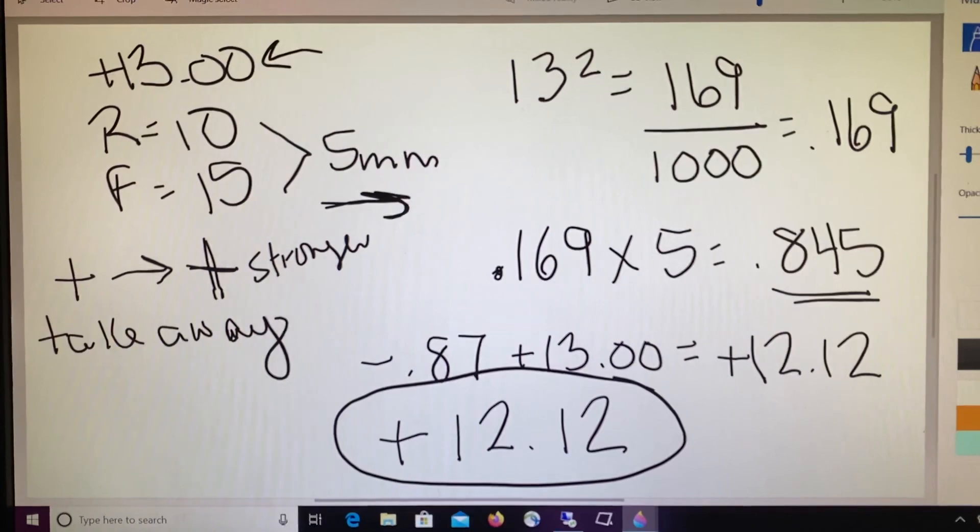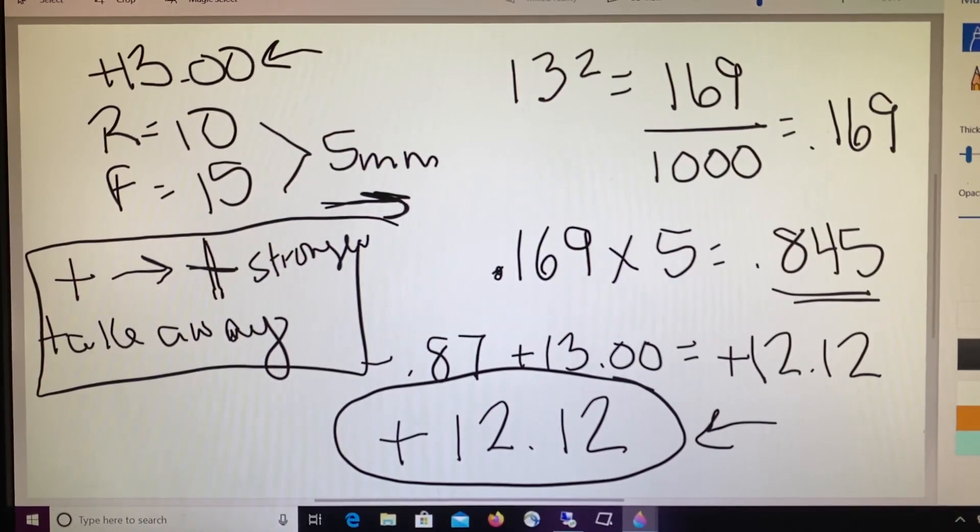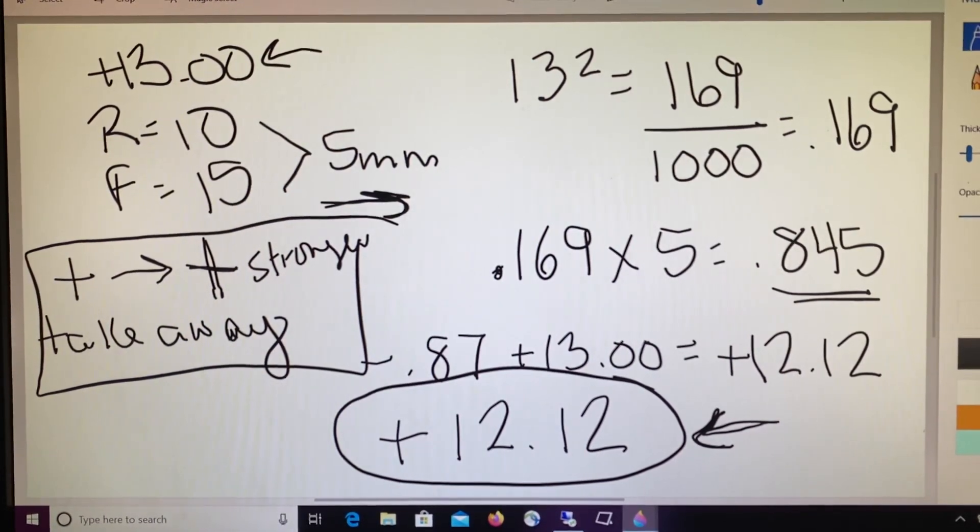The most important part of this conversation isn't necessarily this answer at the end, but more what happens when we move a pair of glasses. Understanding that pluses moved away get stronger and minuses moved away get weaker, and then the opposite for when we move glasses closer to our patient, is the more important concept. Yes, we can do the math and figure it out, however understanding what happens to a lens when it's moved is most important. Hope you enjoyed the instruction. If you have any questions, give me a call. Thanks, bye!